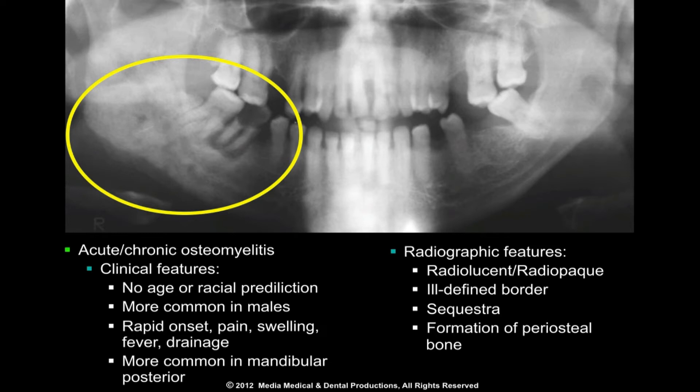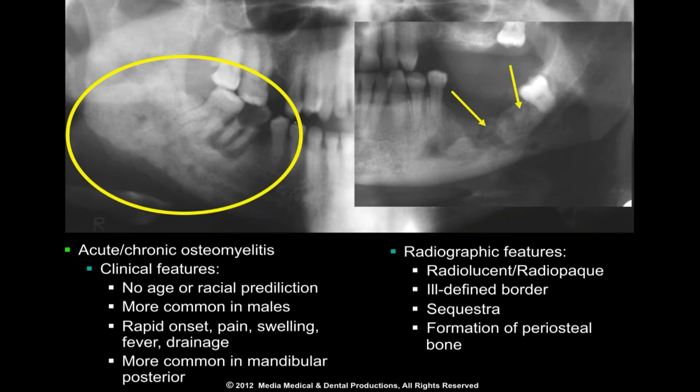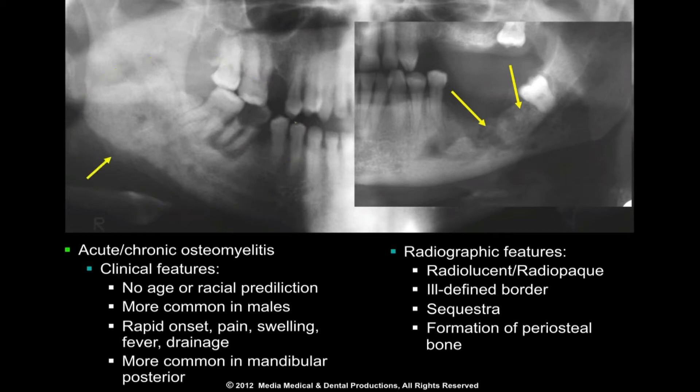Purulent drainage may also be present. Symptoms of chronic osteomyelitis are generally less severe. A hallmark of osteomyelitis is the presence of bony sequestra within the body of the lesion. In addition, both acute and chronic osteomyelitis may stimulate the formation of periosteal bone.